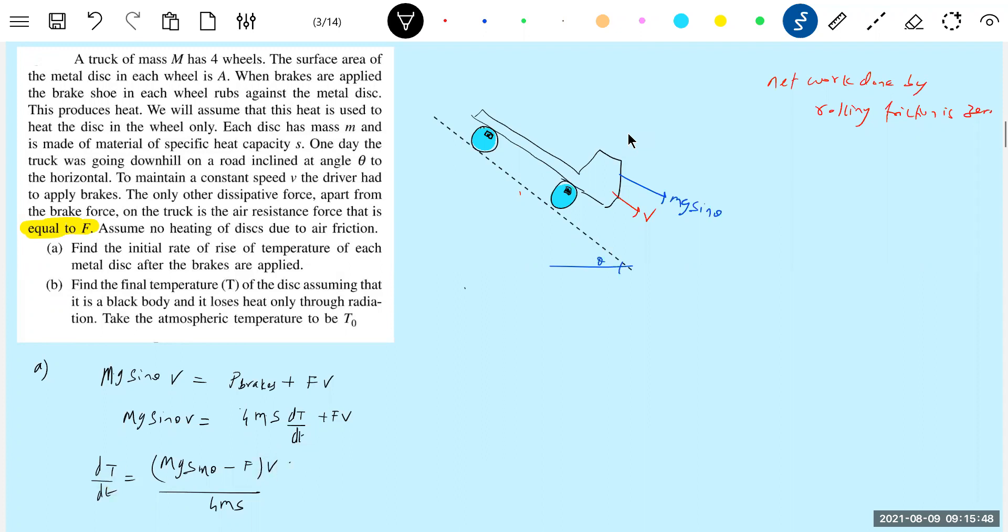So we have to do it. Okay, fine. Okay, this is about the part A. What about the part B? Part B will be: find the final temperature of the disc, assuming that it's a blackbody and loses heat only through radiation.